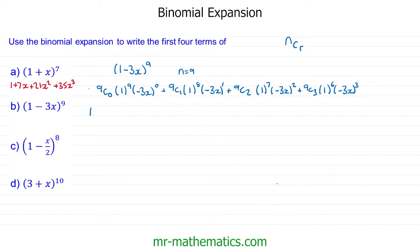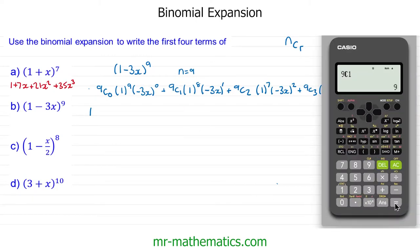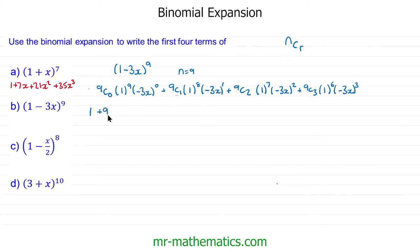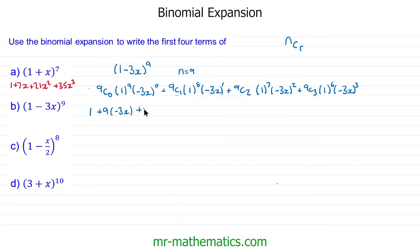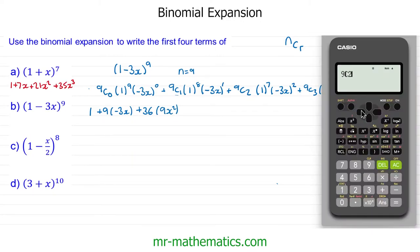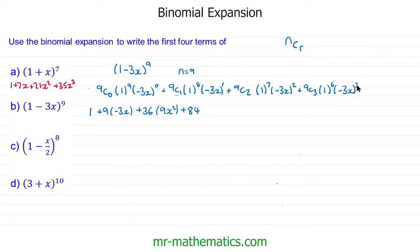For 9 choice 1, we get 9. Then 1 to the 8 is 1, and we have negative 3x in brackets. For 9 choice 2 we get 36, and (negative 3x) squared is 9x², so 36 times 9x² gives plus 324x². For 9 choice 3 we get 84, and (negative 3x) cubed gives negative 27x³, so we have 84 times negative 27x³, which is 84 lots of negative 27x³.